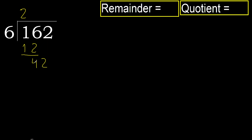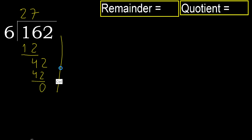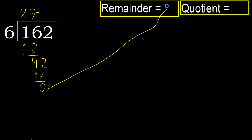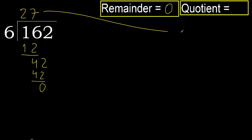Next: 42. 6 multiplied by 7 is 42; 42 is not greater. Ok, subtract — result is 0. Next, there is no more number, therefore finish it. 162 divided by 6 is 27.